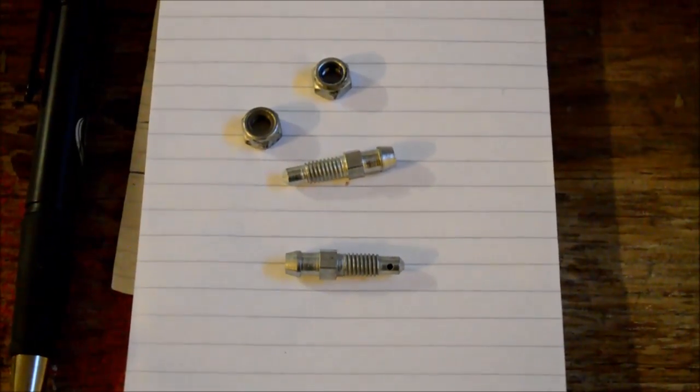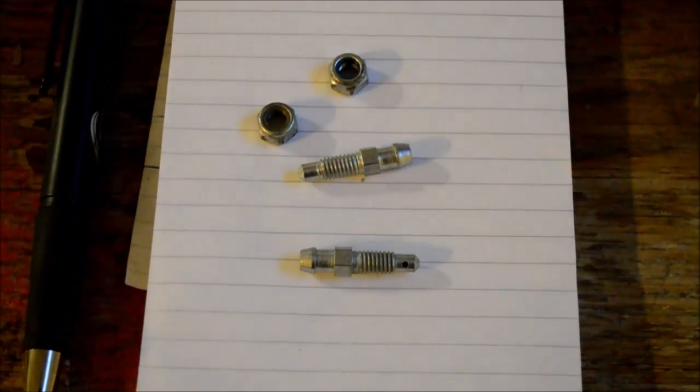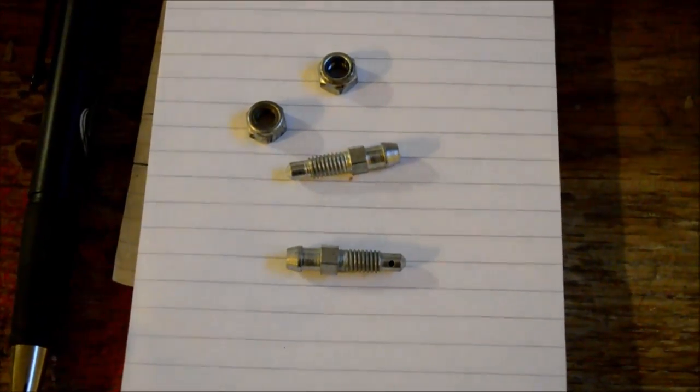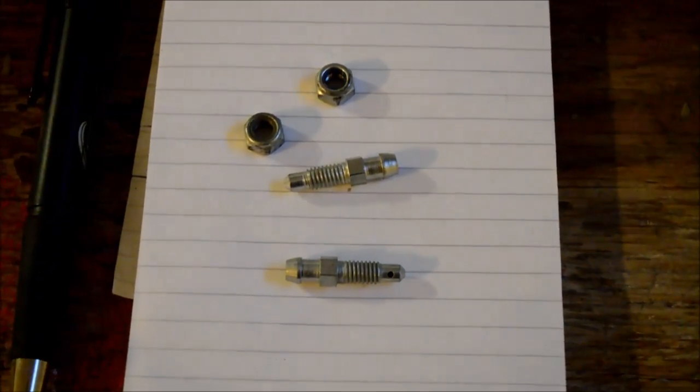One part I am going to use is two standard bleeding nipples for the brakes that you can find in any auto store. It is with a 6mm thread.